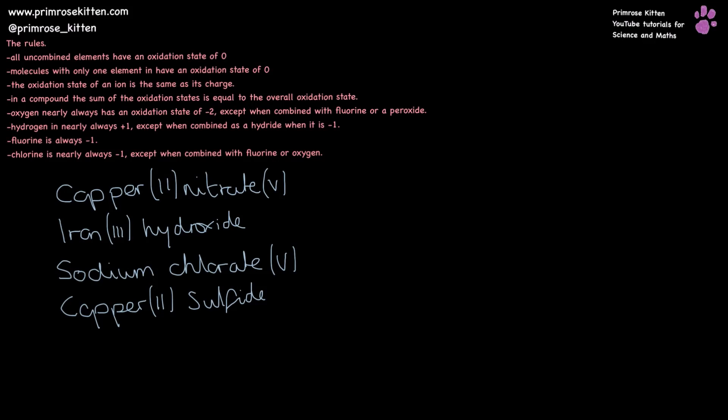Here are four named compounds that we are going to work out the formula of. Now this is very similar to doing it in reverse, working out the name of the compound from the formula. And if you haven't watched that video, I suggest you go and watch that video first. You also need to be really familiar with assigning oxidation states before we do this.